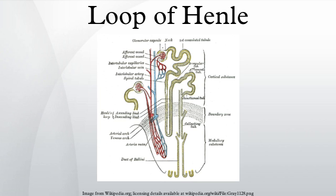The loop has a sharp bend in the renal medulla going from descending to ascending thin limb. The thin ascending limb is impermeable to water, but it is permeable to ions.